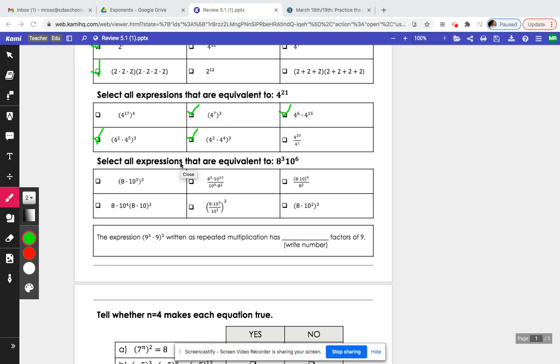Alright, let's keep going here. So question seven says, select all the expressions that are equivalent to 8 to the third times 10 to the sixth. Different bases, so we actually cannot put these two together, but we can go through and see which ones will be equivalent.